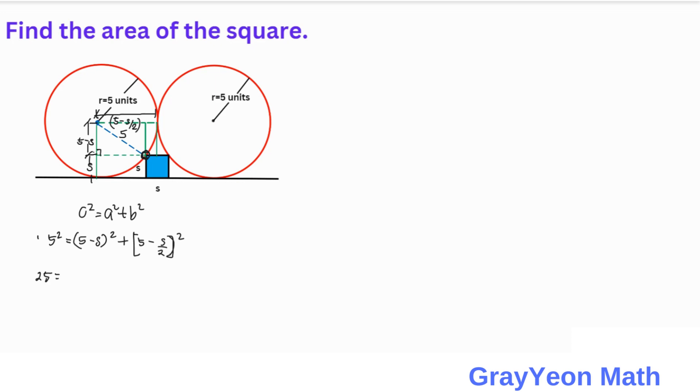Simplifying, we have 25 equals 25 minus 10S plus S squared plus 25 minus 2 times 5 times S over 2. This cancels out, and plus S squared over 4.